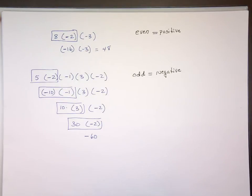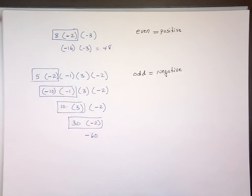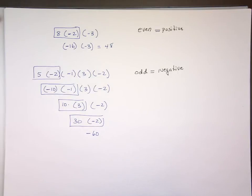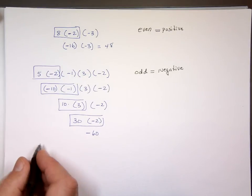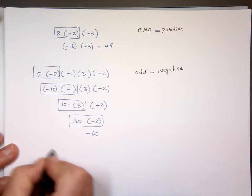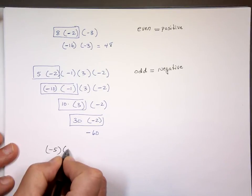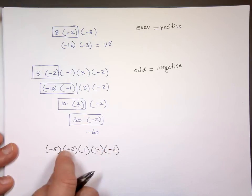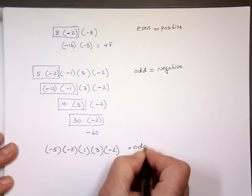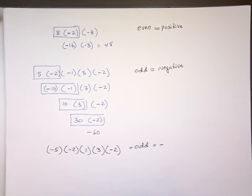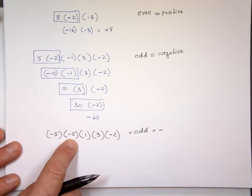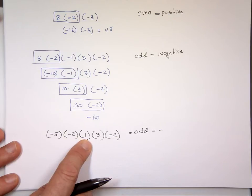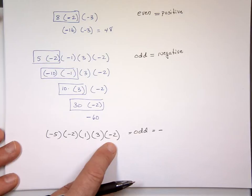If they have the same sign, you have an even number of negative signs — that's positive. If they have a different sign, you have an odd number of negative signs — that's negative. So some people just count the negatives: negative five times negative two times one times three times negative two — three negative numbers, that's odd, so the answer is negative. Then just multiply the absolute values: five times two is ten, times one is ten, times three is thirty, times two is sixty. Negative sixty.